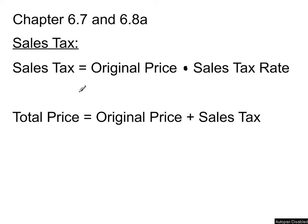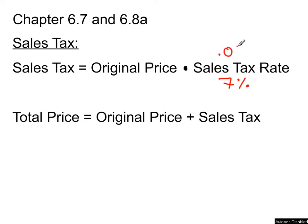We're going to cover chapters 6.7 and 6.8a all in one go. This chapter is largely based on formulas. The first one is sales tax, which hopefully we're all a little familiar with. Sales tax equals the original price times the sales tax rate. For those in Charlotte County, the sales tax rate is 7%, which we write as the decimal 0.07.